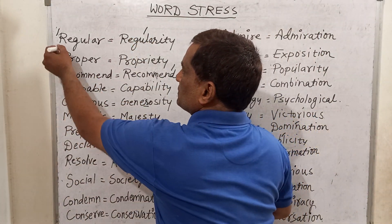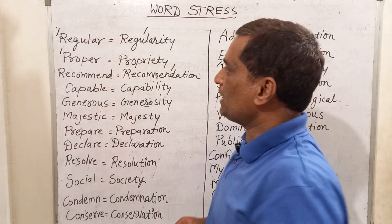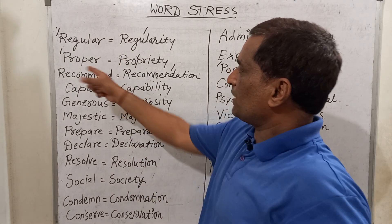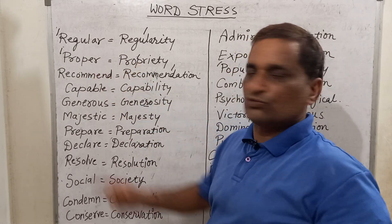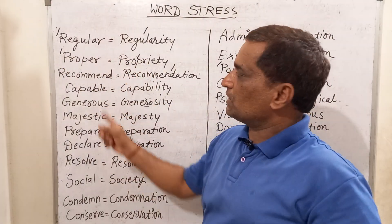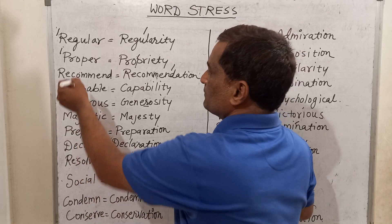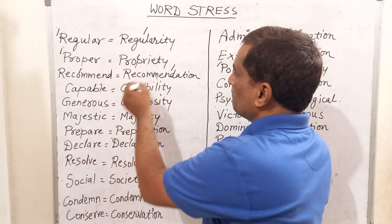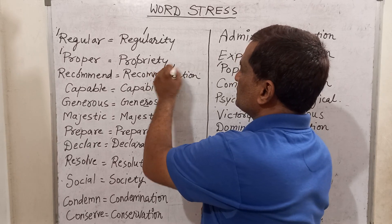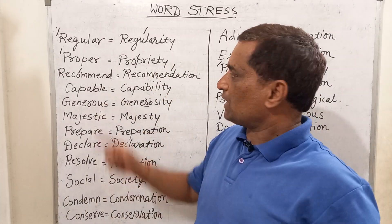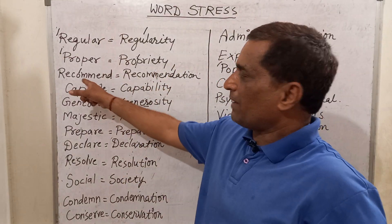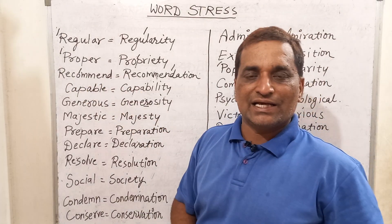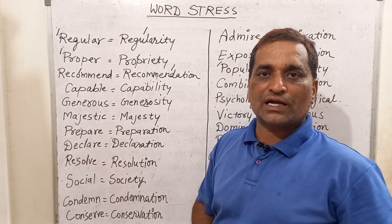For 'proper', the stress will come before P — 'proper'. And for 'propriety', the stress shifts. 'Proper' and 'propriety'. Next is 'recommend' — the stress will come before M: 'recommend'. And for 'recommendation', the stress will come before D: 'recommendation'. It is said that self-praise is no recommendation.